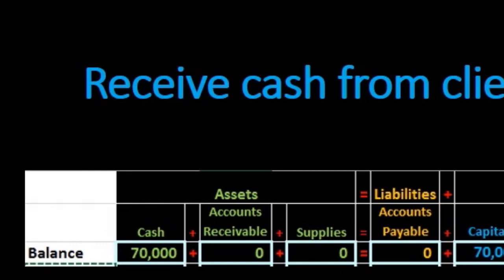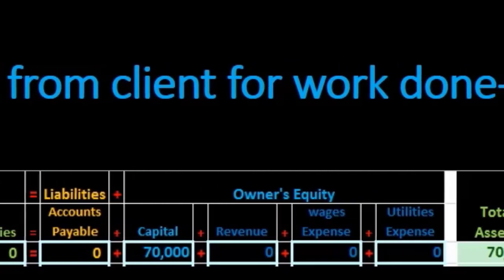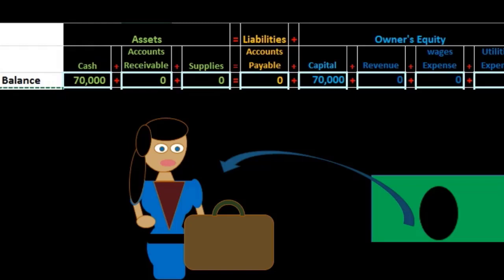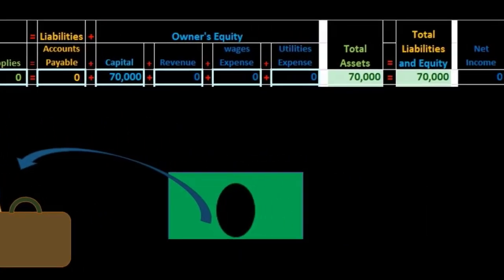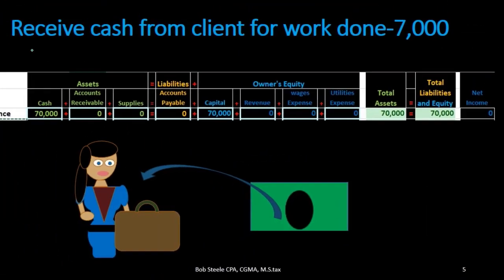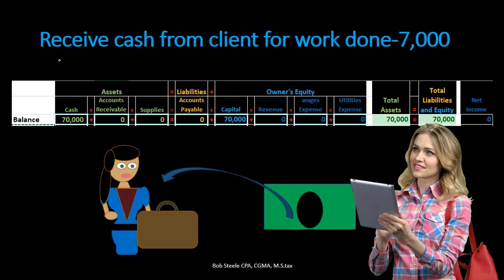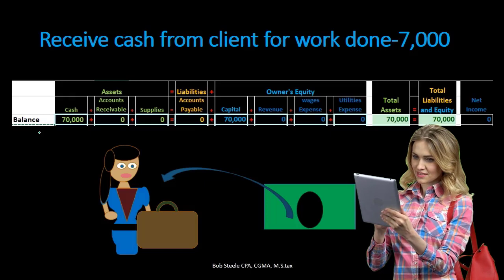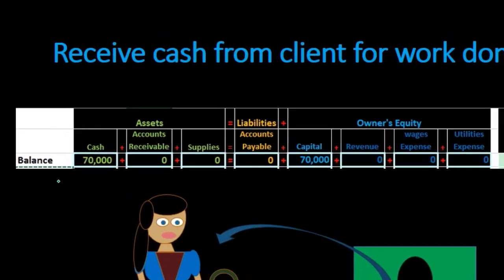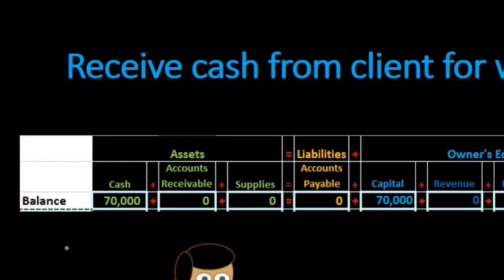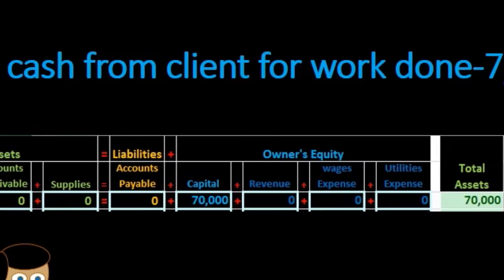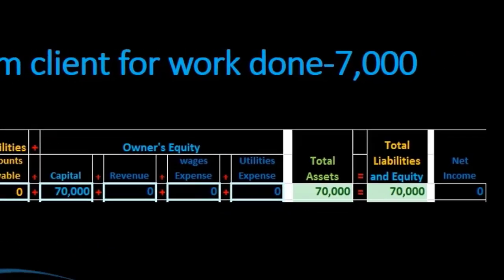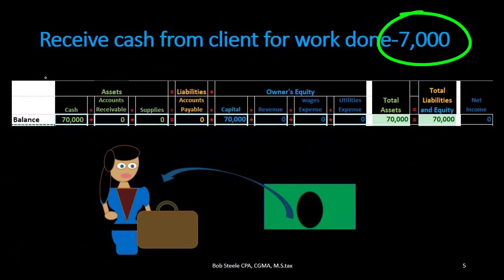We'll start with a beginning balance, add the new activity, and then get the new balance. As we record these transactions we always start in balance, record something that will be in balance, and end with something that remains in balance.